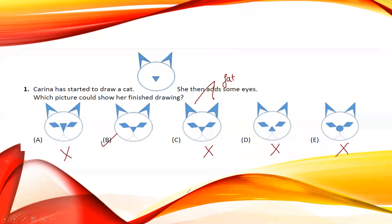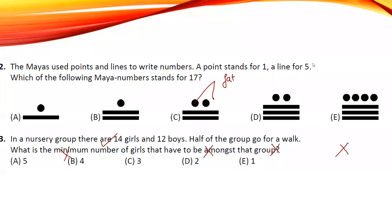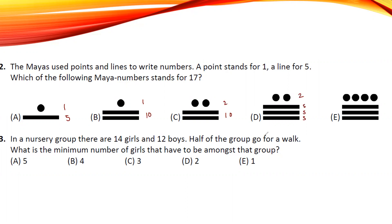Moving to the next question: Maya uses points and lines to write numbers. Here you see five and one, ten and one, ten and two. So: five, ten, fifteen plus two equals seventeen. Look at the answer — no need to go further.